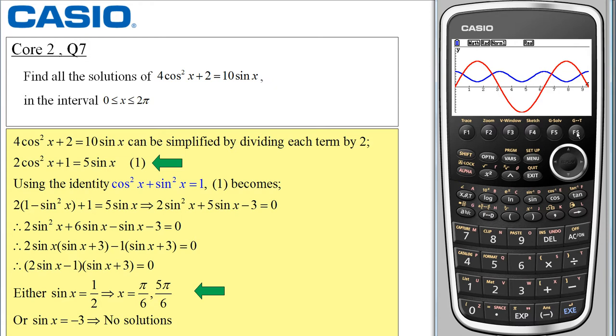Now let's look at these points of intersection. I select g solve which is f5 and f5 again for intersection. The first point it gives me here.